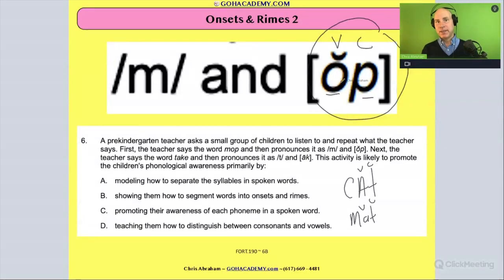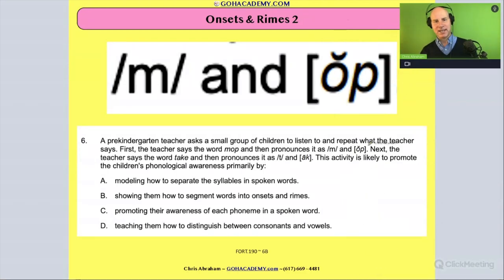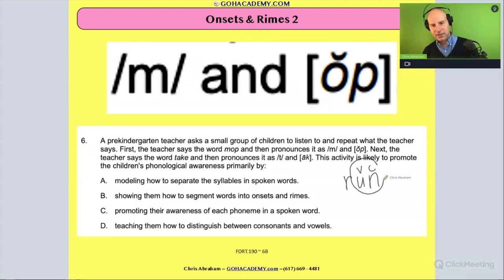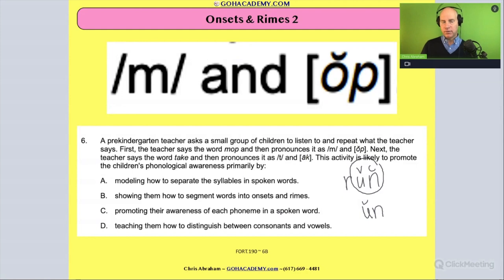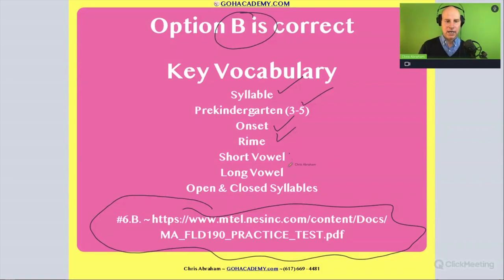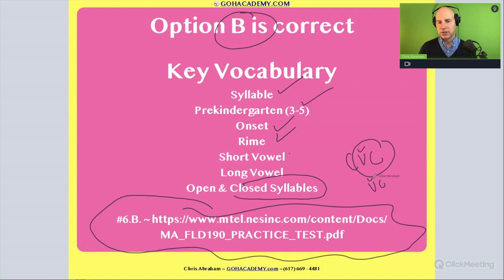A closed syllable means the vowel is going to be short. You see this with CVC words. For example, the word 'run' — vowel consonant — that's a closed syllable, which means the vowel is going to be short: a short U in 'run.' An open syllable would be a long vowel sound, but we'll save that for a little bit later. So right now we'll just focus on closed syllable CVC words with a short vowel, and we'll touch upon the open syllable in much more detail later.